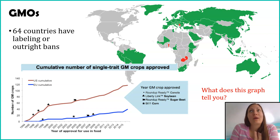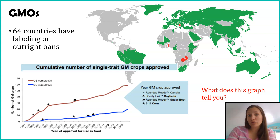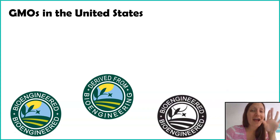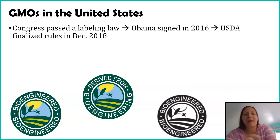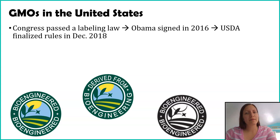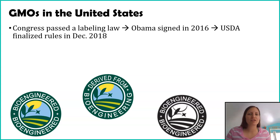This hopefully grants you more confidence that you're eating something that is safe for you and the environment. Things are also changing in the United States. Congress passed a GMO labeling law a few years ago, and President Obama signed it into law in 2016. The law simply said we will have labeling of GMOs in the United States, with no other information on how that would happen.